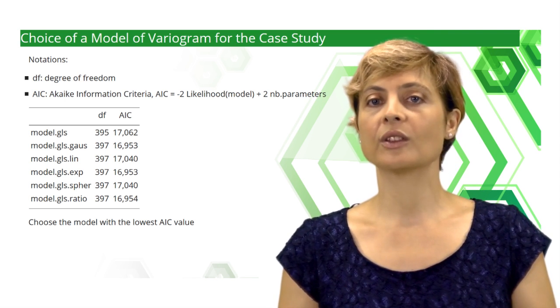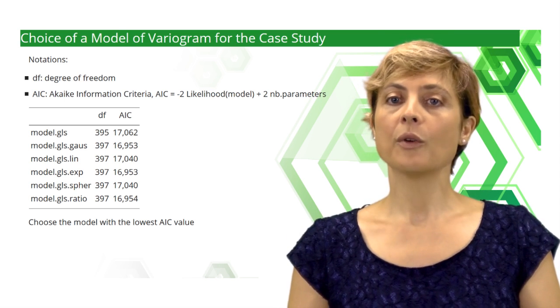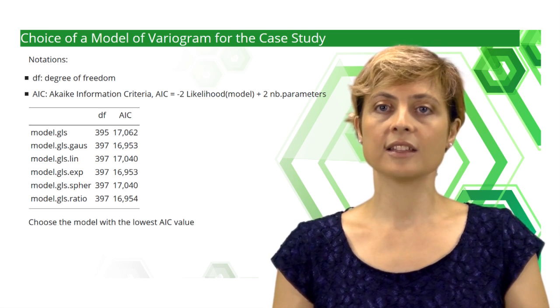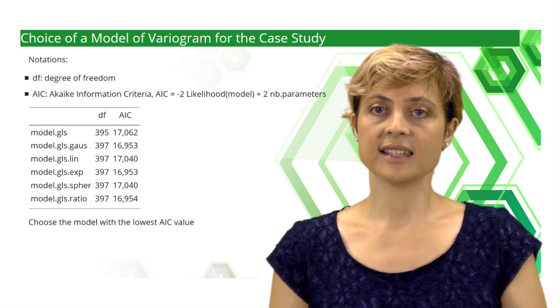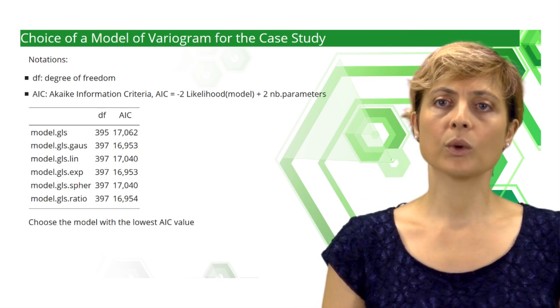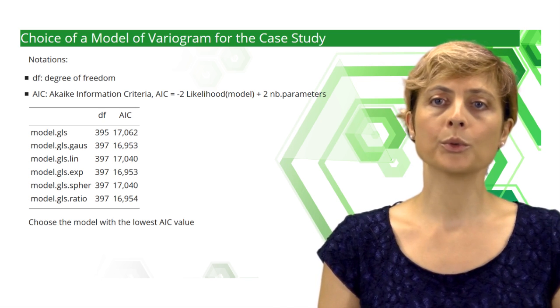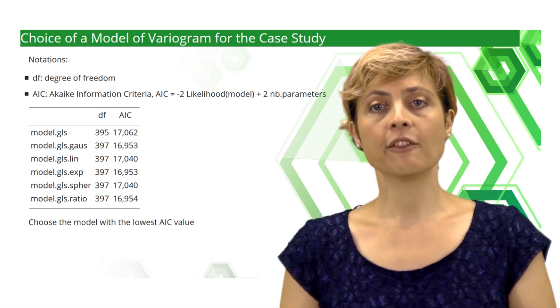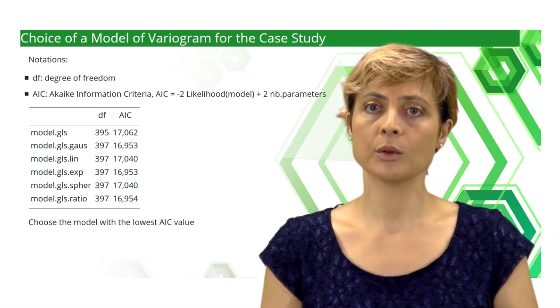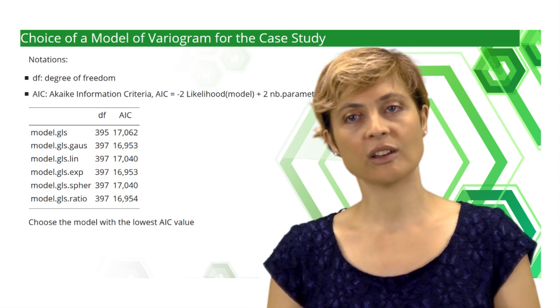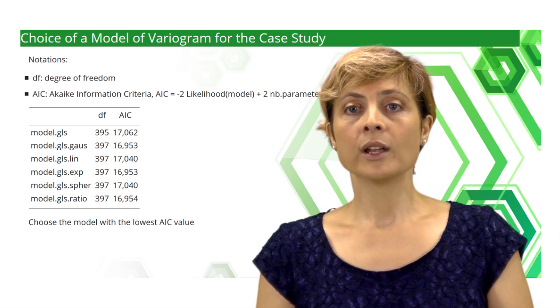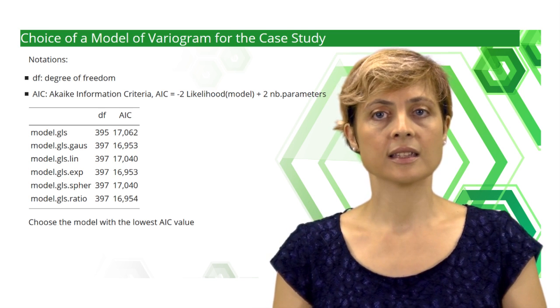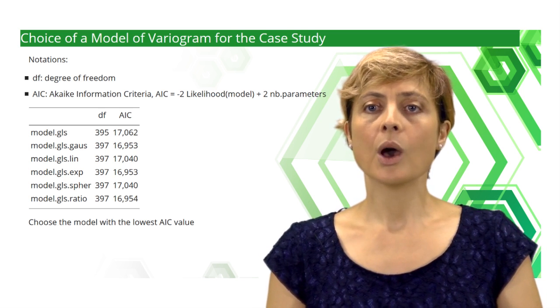How do we choose a variogram model from the list of possible models? First, do a visual inspection of the experimental variogram. Next, for a model comparison, there are different criteria. Here, we suggest the usual Akaike information criteria, or AIC. AIC is equal to minus twice the likelihood of the model computed on the data, plus twice the number of parameters of the model. Therefore, a good model is characterized by a high likelihood and a reasonable number of parameters to avoid overfitting. Hence, when looking at the AIC, it appears that a good model is characterized by a low AIC. Here, it's the exponential model or the Gaussian model. We choose the exponential model.